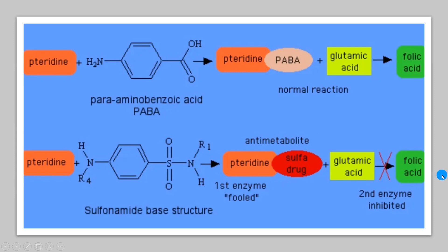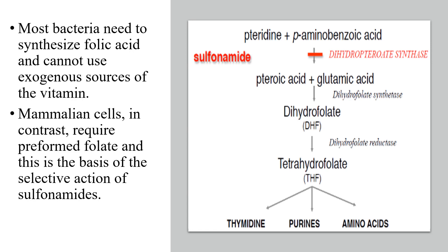In mammals, folic acid is not synthesized but is instead taken in through the diet. Since folic acid synthesis does not occur in mammalian cells, administering sulfanilamide as an antibacterial drug is not dangerous to humans. This is the basis for its selective toxicity — since mammals obtain folic acid through diet and this biosynthetic step does not occur in our bodies, sulfanilamide will only exert antibacterial effects and will not be toxic for humans.